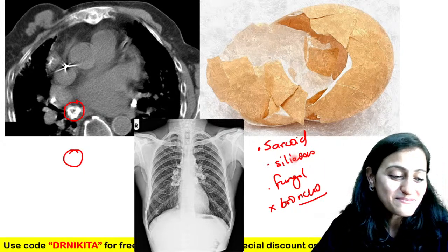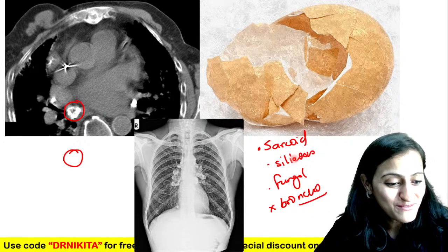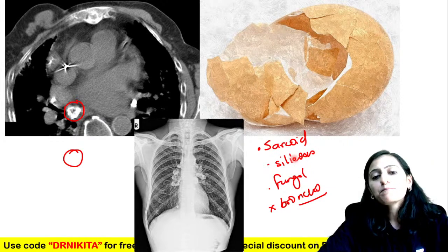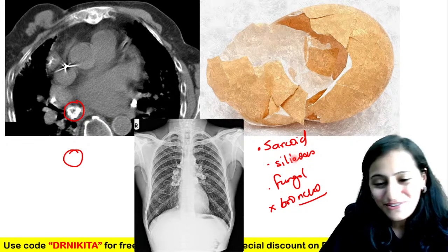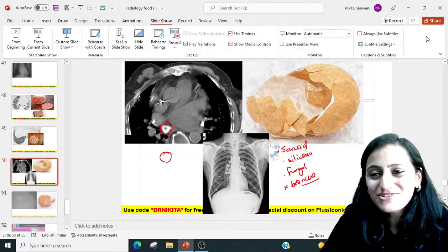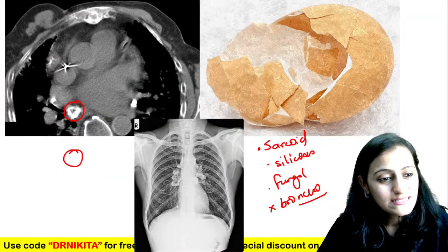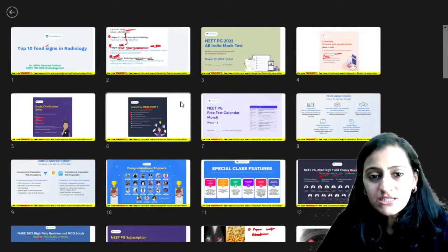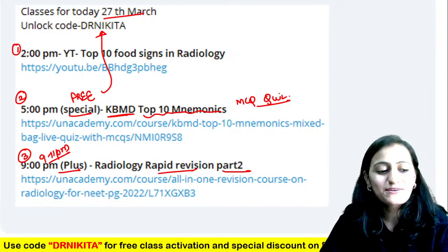Six questions from the mnemonics — let me know what questions you got from the mnemonics in the test. Barium enema — what sign in sigmoid volvulus? The barium goes up and gets stopped like a bird beak — bird beak or bird of prey sign. Thank you so much everyone for joining this mouth-watering session of food signs in radiology. See you at 5 PM for KBMD top 10 mnemonics, and at 9 PM for the radiology rapid revision plus class.